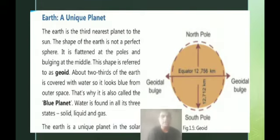The Earth is a unique planet. The earth is flattened at the poles—at the North Pole and South Pole—and bulges in the middle. This shape of the earth is referred to as geoid.